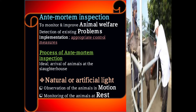Ante-mortem inspection is used to monitor and improve animal welfare, and to detect existing problems and implement appropriate control measures. So ante-mortem inspection is not only concerned with physical examination of the animals, but also with improving and monitoring animal welfare, detecting problems, and then eliminating those problems.